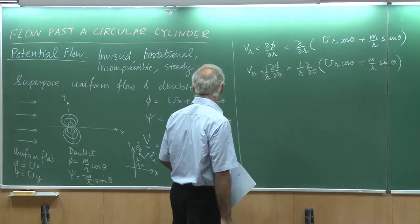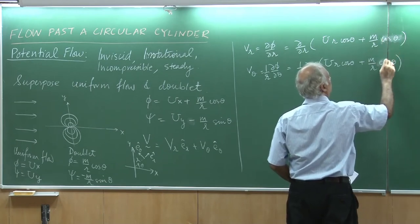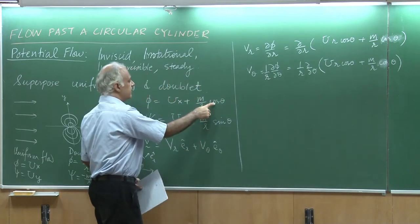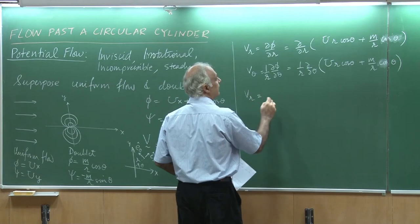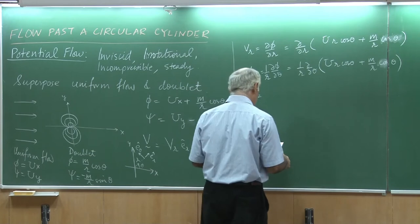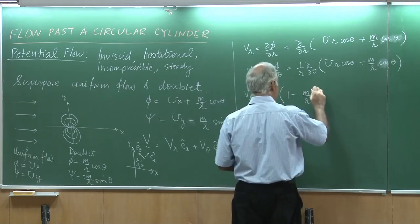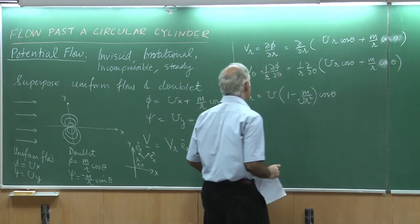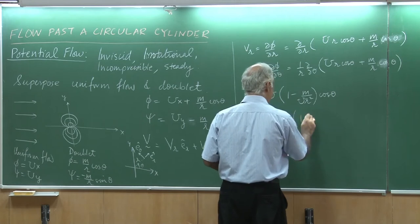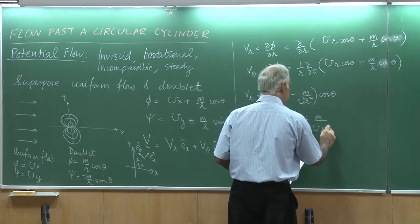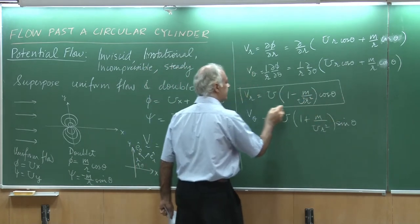I made an error — the doublet phi should have been cosine theta, not sine theta. So looking at phi as m divided by r times cosine theta, when I work out v_r, I take cosine theta outside and do a derivative with respect to r. I get v_r equals u times (1 minus m over r squared) times cosine theta. And likewise, v_theta equals minus u times (1 plus m over r squared) times sine theta. These are my components of velocity everywhere.